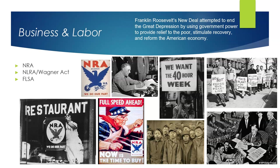The National Labor Relations Act, enacted in 1935 and commonly known as the Wagner Act, not only legalized the operation of labor unions, but also imposed restrictions on individual states, preventing them from passing laws that would make unions illegal. The law guaranteed workers the right to form and join unions, engage in collective bargaining, and participate in other activities to protect their interests in the workplace. This landmark legislation significantly bolstered the rights and influence of workers, reshaping the landscape of labor relations in the country.